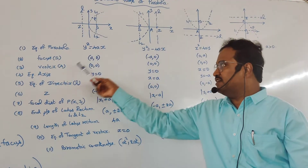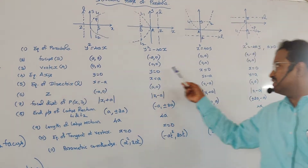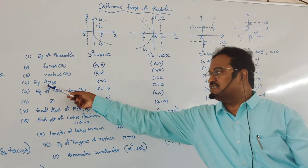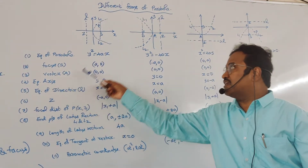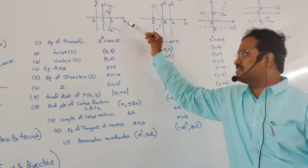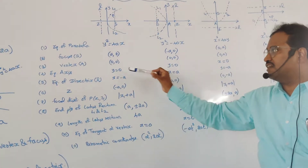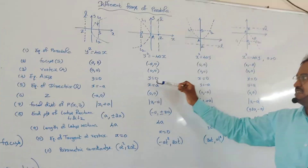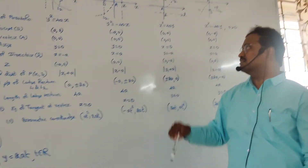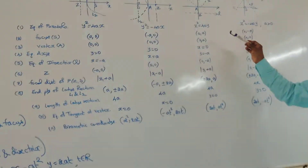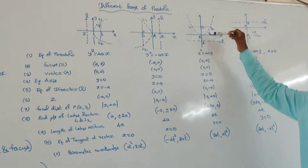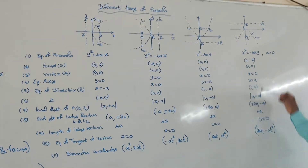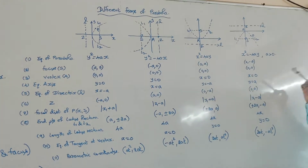The vertex for all four forms is the origin (0, 0). The axis of the parabola: for the first and second forms it is the x-axis, y = 0; for the third and fourth forms it is the y-axis, x = 0.